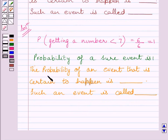Now, we can write the probability of an event that is certain to happen is 1, and such an event is called sure event.